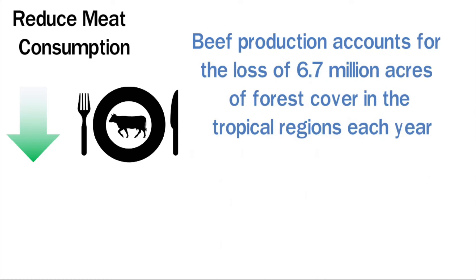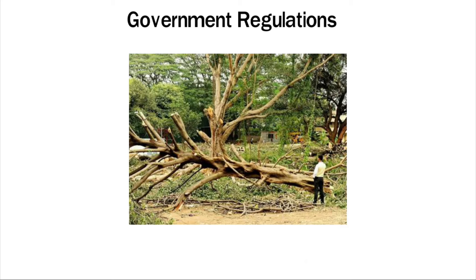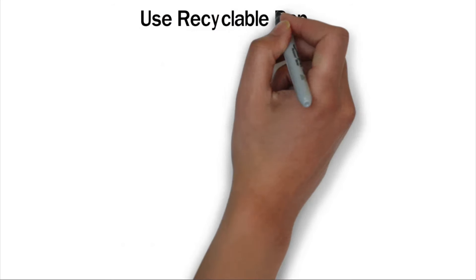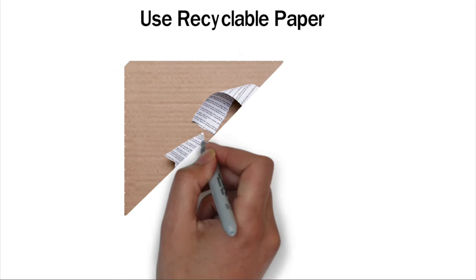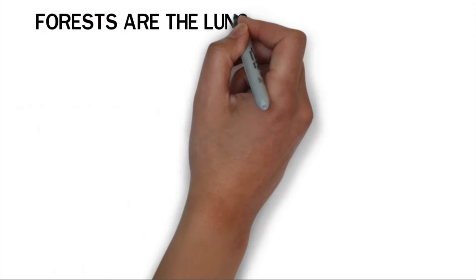Government regulations: The government should impose regulations against illegal logging in forests. This will greatly reduce the number of trees that are cut. Use recyclable paper: When we use recyclable paper, trees won't be cut from time to time to make new paper. People should also use recyclable packaging materials.